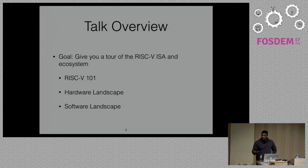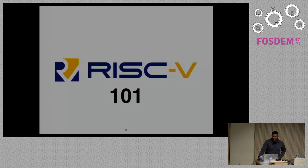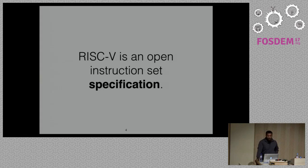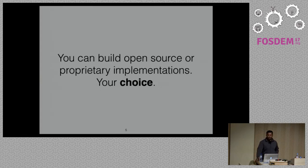RISC-V is an open instruction set specification — an ISA. Some other ISAs you may be familiar with are x86, ARM, Power, Alpha, and MIPS. Unlike them, RISC-V is actually an open specification. You can build open source or proprietary RISC-V implementations — it's completely up to you. It's an open standard and you can do what you want with it. If you tried to do this with ARM or x86, you might get a friendly letter from one of their lawyers.